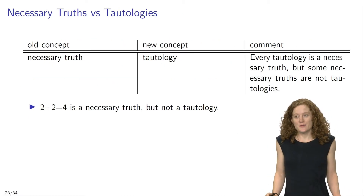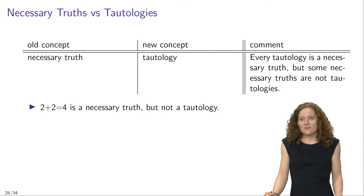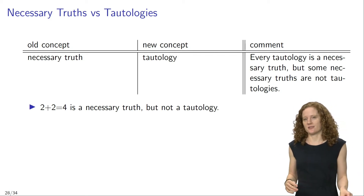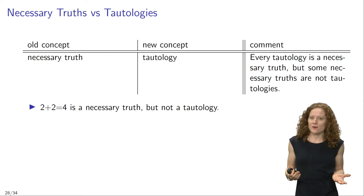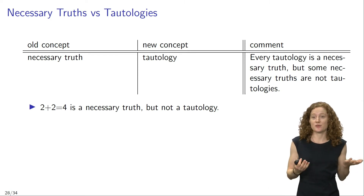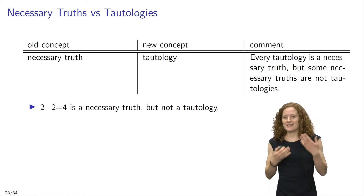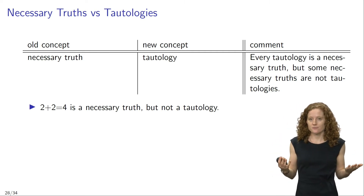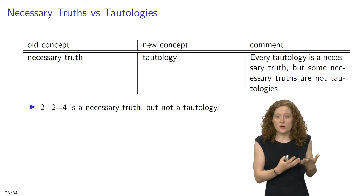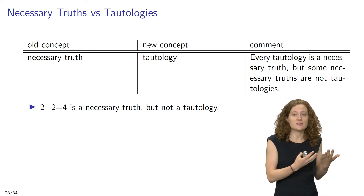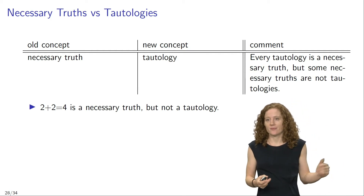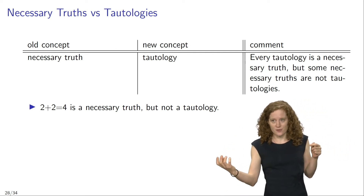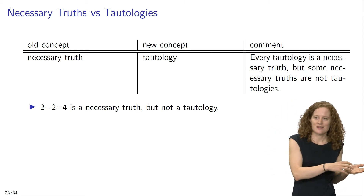We have introduced a number of new semantic concepts. Let's relate these new concepts to the old concepts that we have already encountered. In our very first lecture, we learned about necessary truth — a sentence is a necessary truth if and only if it is true in every possible scenario. This concept is closely related, but also importantly different from the new concept of a tautology. In particular, every tautology is a necessary truth, but some necessary truths are not tautologies.